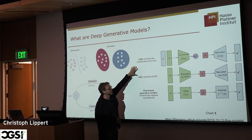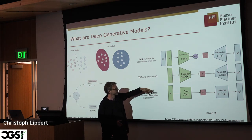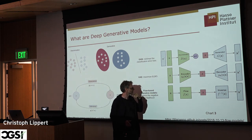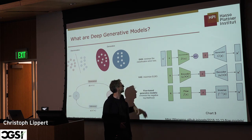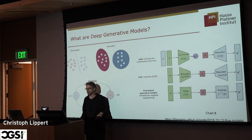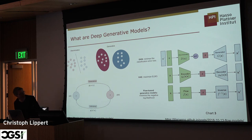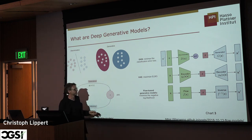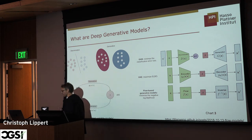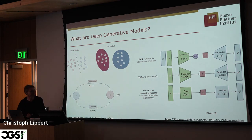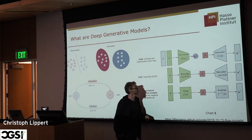Because flows are invertible, they enable something that GANs and VAEs don't. With GANs and VAEs you always have to approximate — for example, instead of working with the log likelihood of your data, you work with a lower bound, the evidence lower bound. But for flows, we can work directly with the log likelihood and learn the parameters by maximizing it.